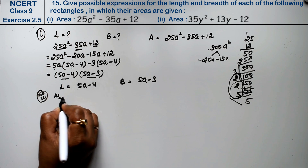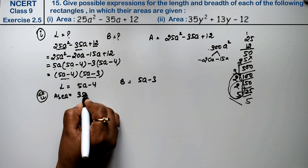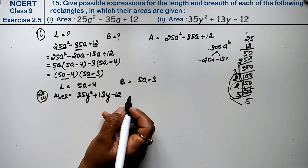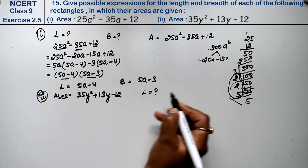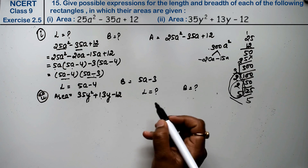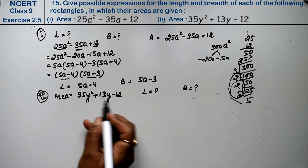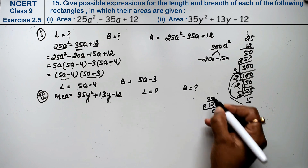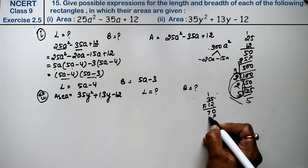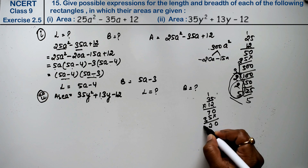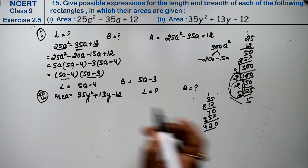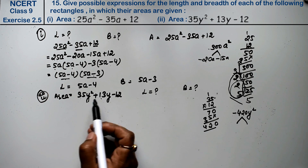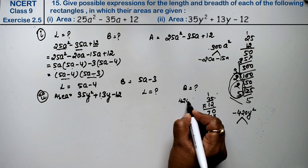Let's do the second part. In the second part, we are given the area 35y² plus 13y minus 12. We have to find length and breadth. So now we will multiply 35 into 12, which gives 420. We need two factors of 420 that give us plus minus 13.